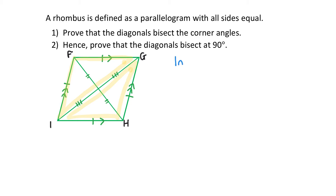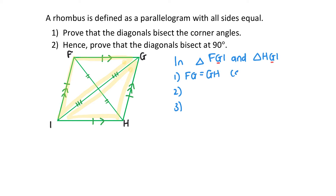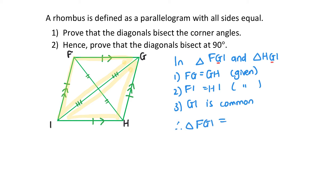In triangle FGI and triangle HGI: FG equals GH — that's given; FI equals HI — also given; and GI is common. Therefore, triangle FGI is congruent to triangle HGI by side, side, side. Since congruent triangles have all pairs of angles and sides equal, the two angle G's are equal, the two angle I's are equal, and angle F equals angle H.